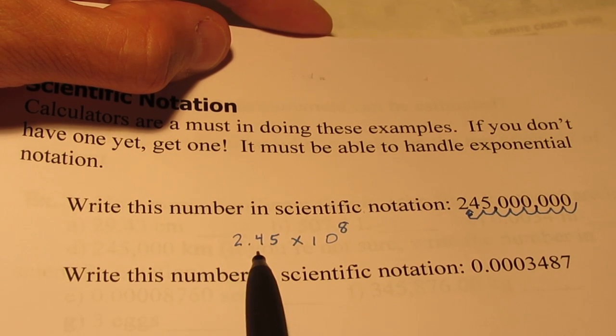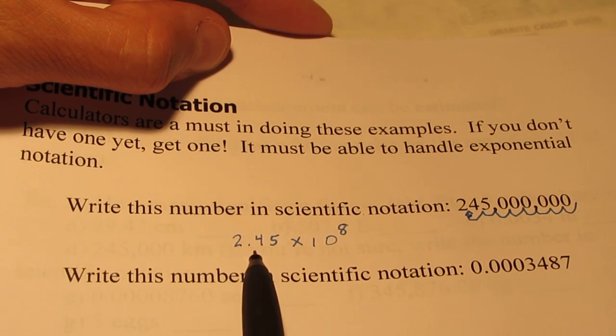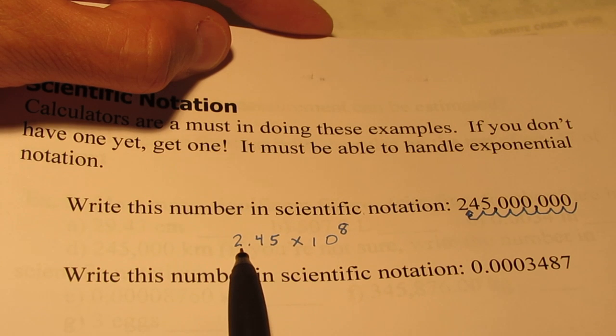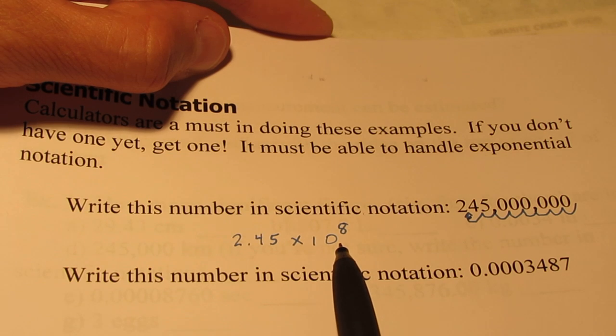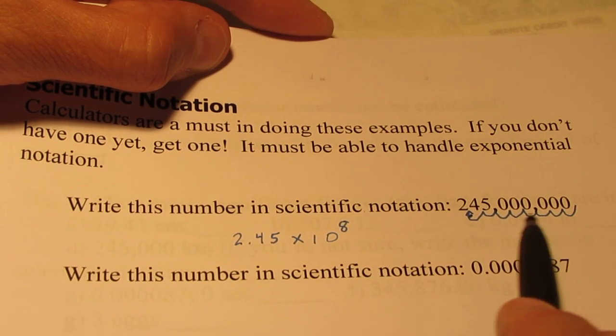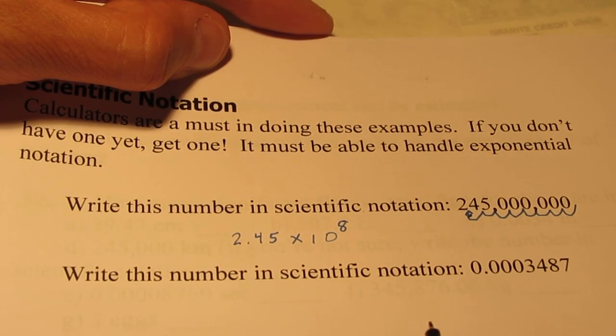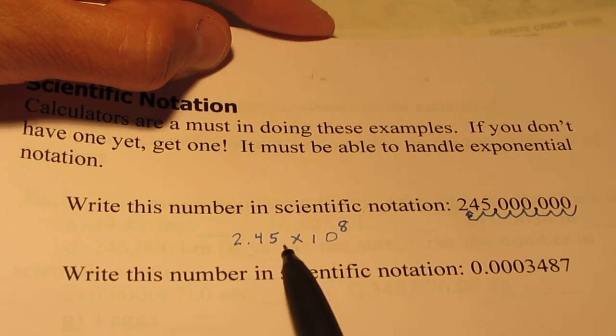Once again, this number here has to be larger than one and smaller than ten. And 2.45 fits that description. Then we simply multiply it by a power of ten and that power of ten is simply the number of places we had to move the decimal to get that value.